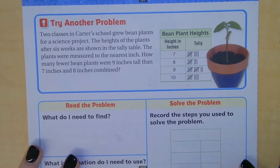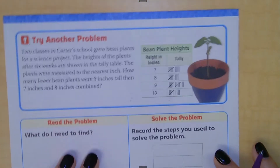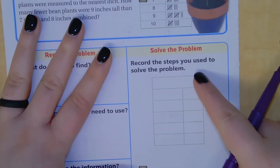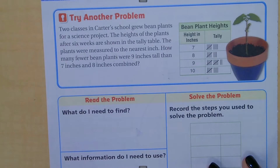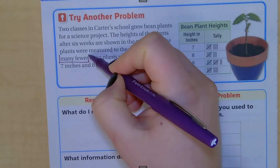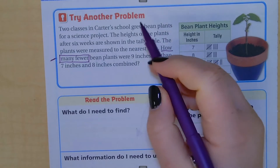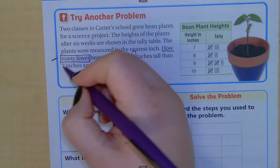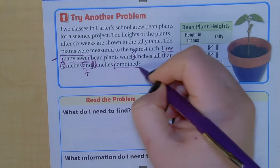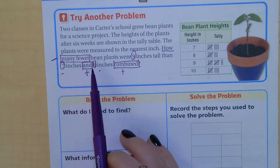Flip your paper over. Now let's try this problem. Two classes in Carter School grew bean plants for a science project. The heights of the plants after six weeks are shown in the tally table; the plants were measured to the nearest inch. How many fewer bean plants were nine inches tall than seven inches and eight inches combined? There are so many clue words here — 'how many fewer' means subtraction, and 'combined' means addition. So I'm going to have to combine the seven and eight and then subtract them from the nine.